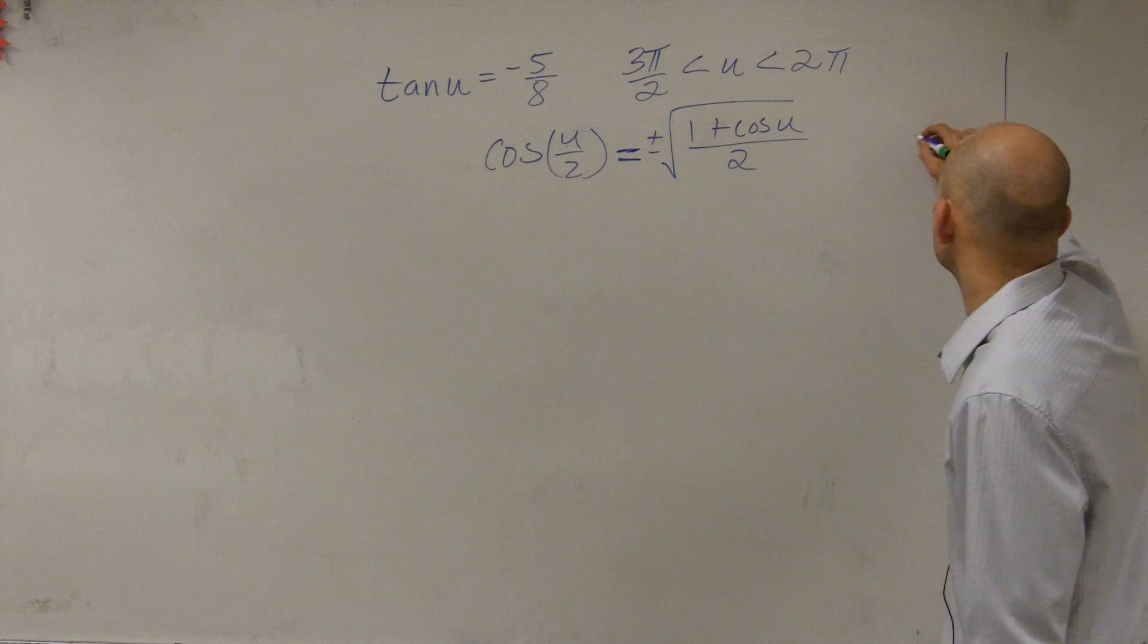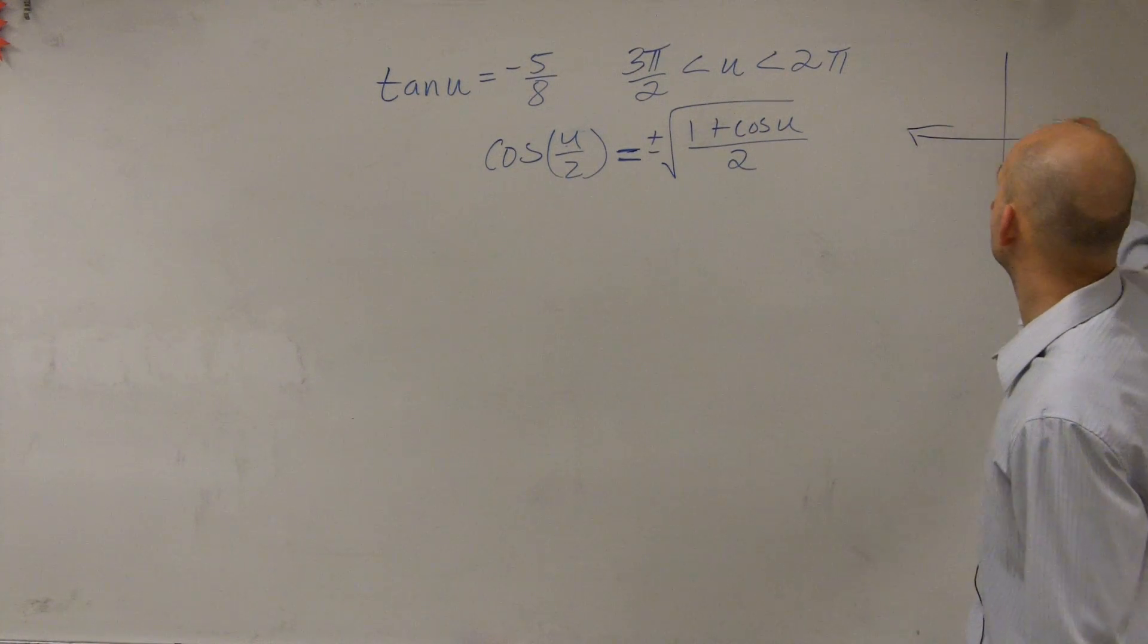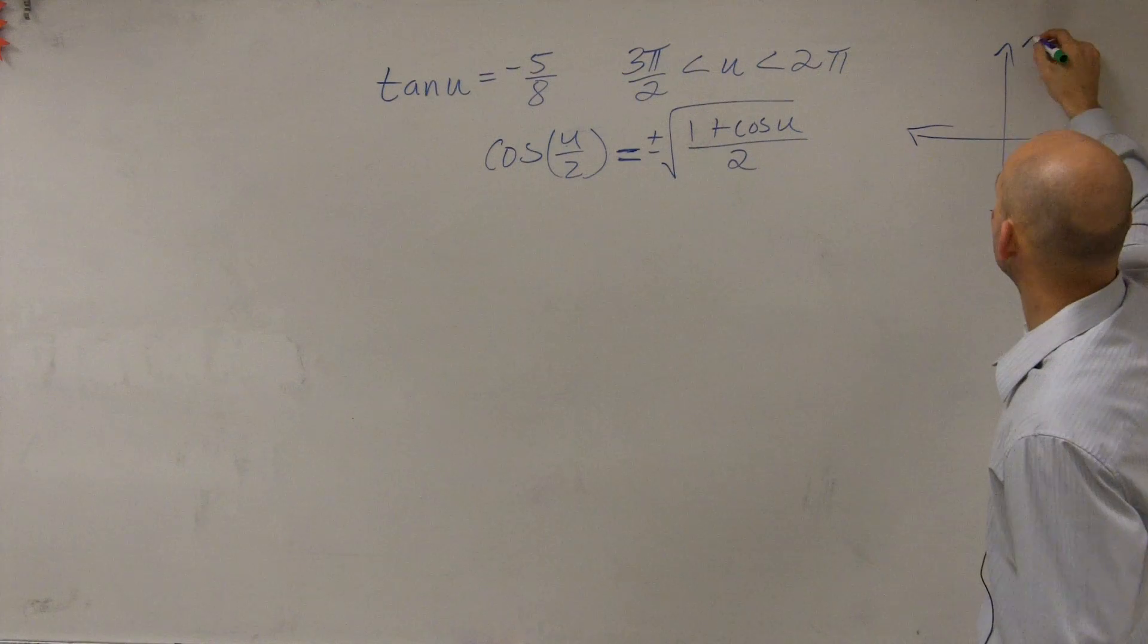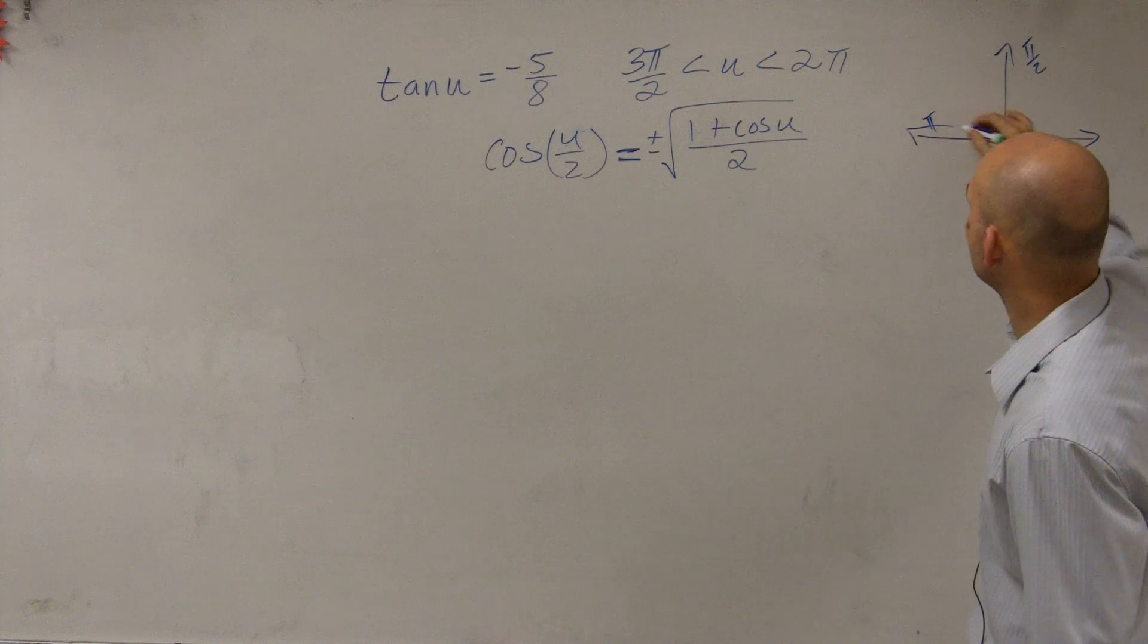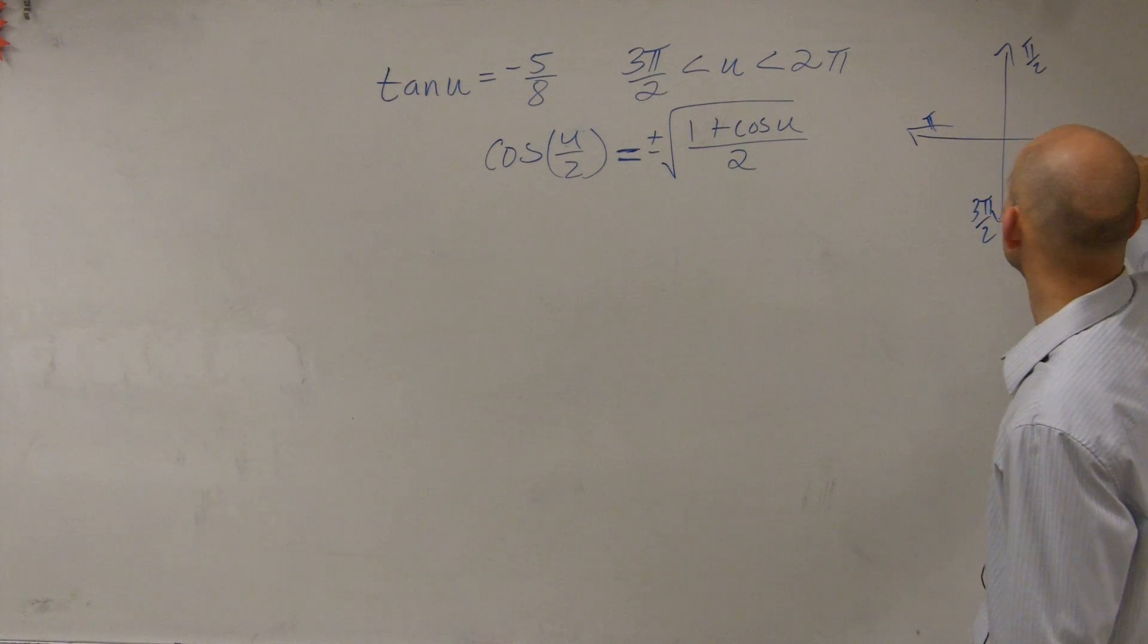So let's take a look at where my constraint is going to tell me my angle is going to be. We know that this is pi over 2. Here we have pi. Here's 3 pi over 2. And then here's 2 pi.